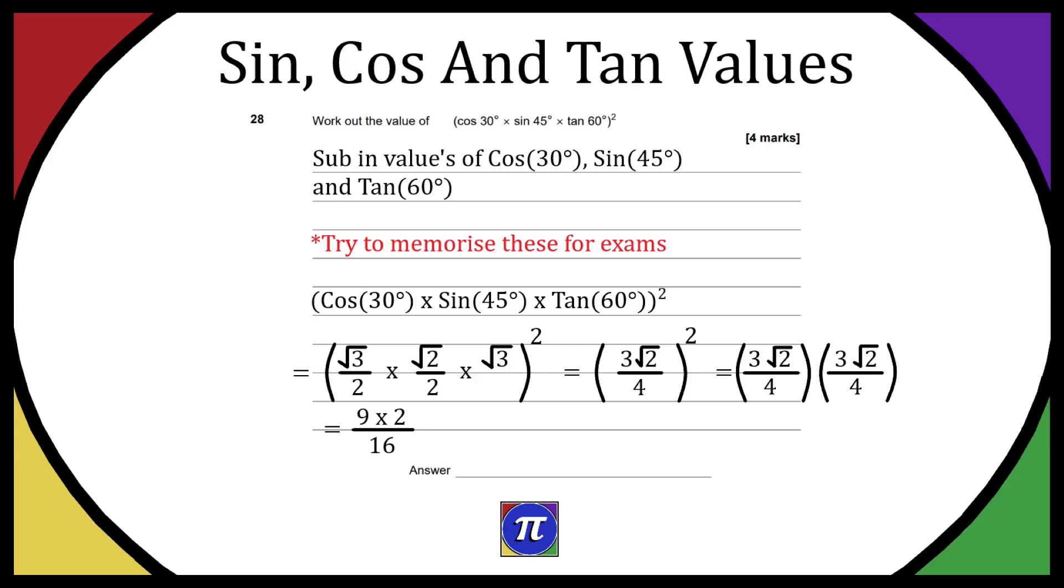On the bottom we have 16 because it's 4 times 4, and then this is going to be 18 over 16. It doesn't say to simplify, but we can simplify to 9 over 8, and that's the final answer.